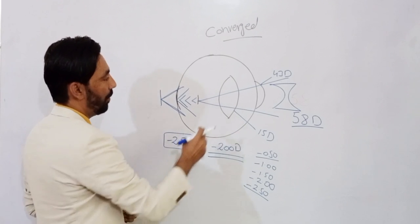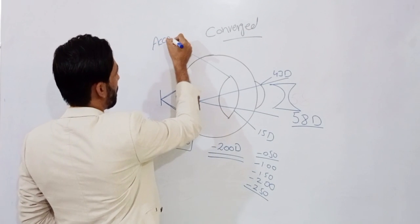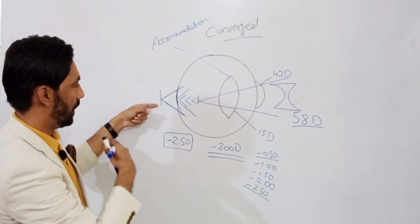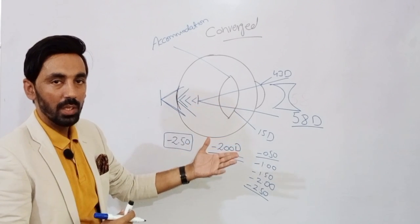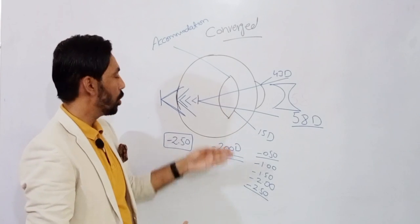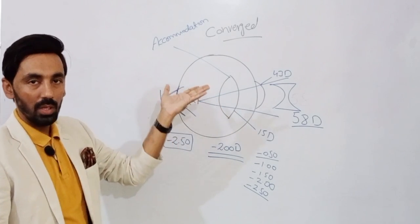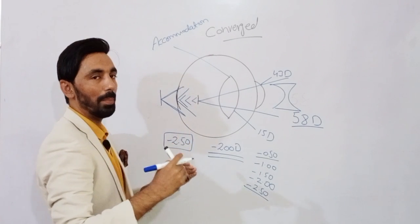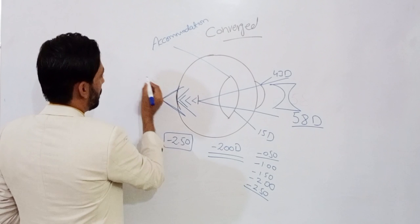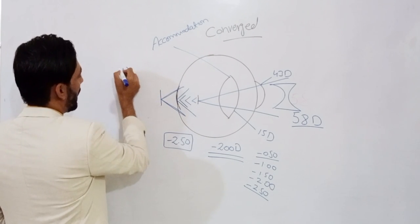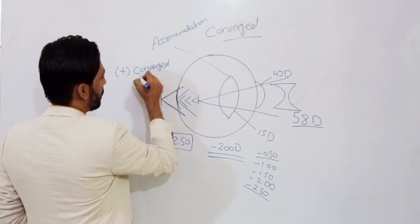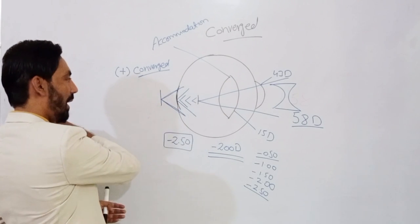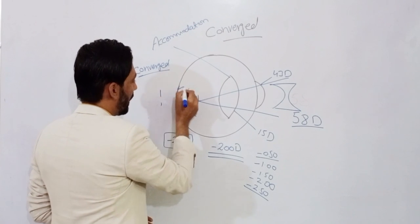There is one process in the patient's eye called accommodation. If the light rays are behind the retina, the lens has the ability to accommodate — which means increasing the plus power of the crystalline lens. When the lens increases its plus power, it converges the light rays that are diverging behind the retina, bringing them back toward the retina.